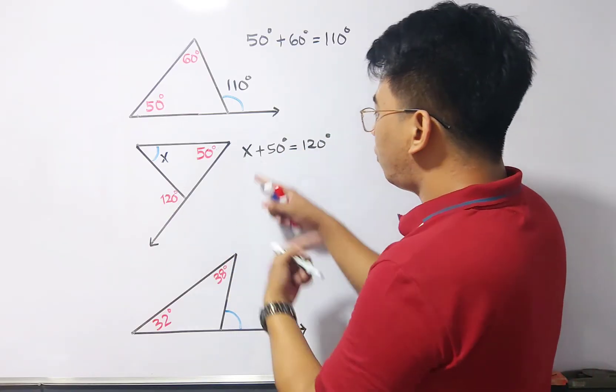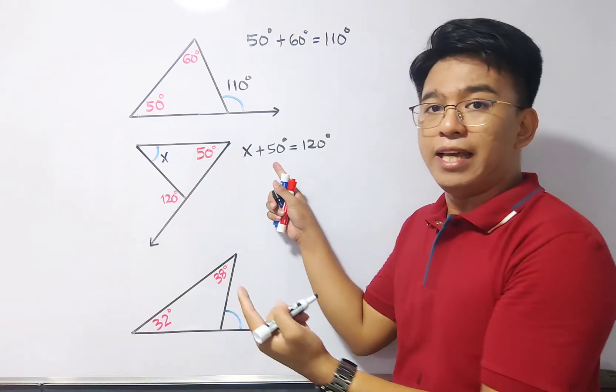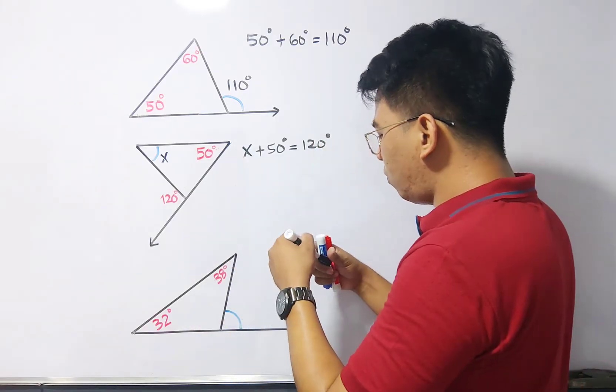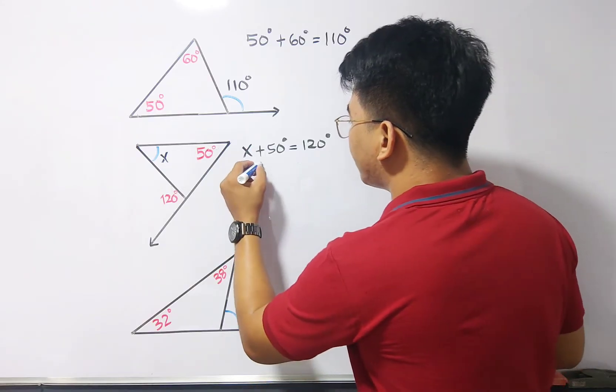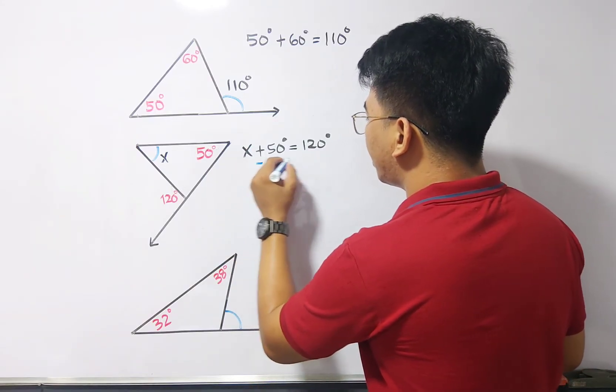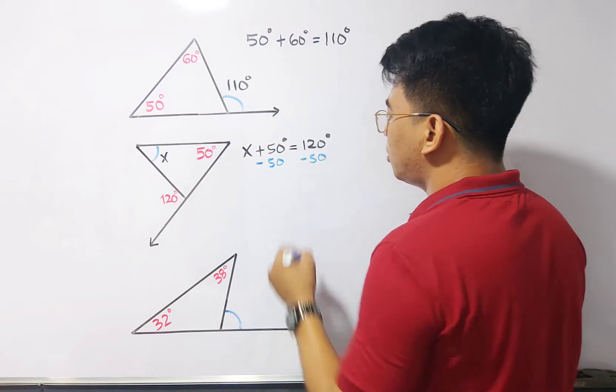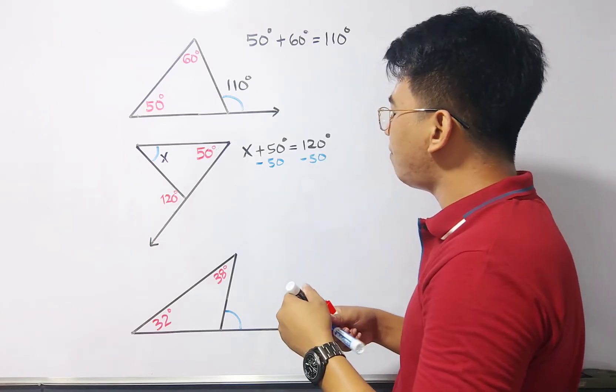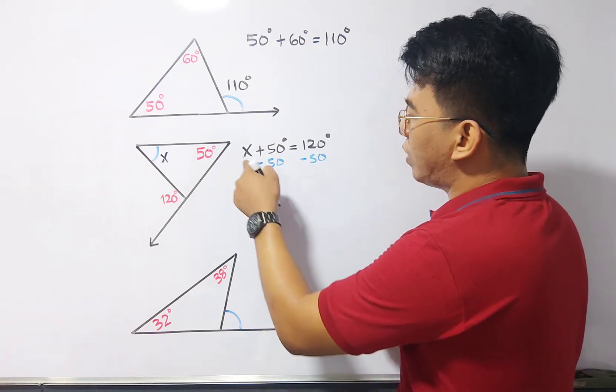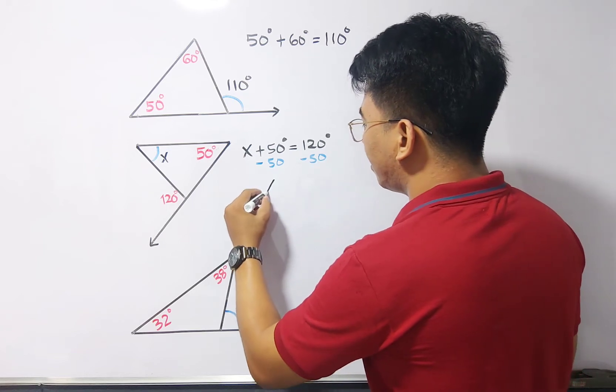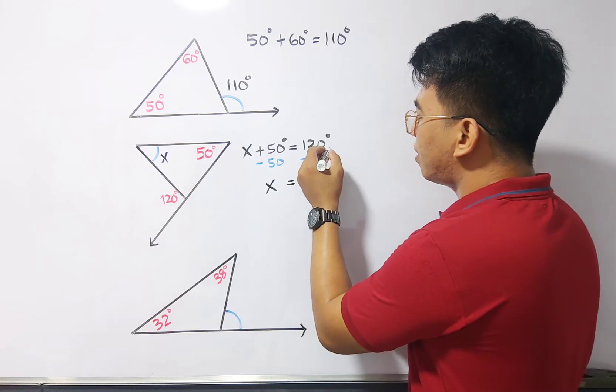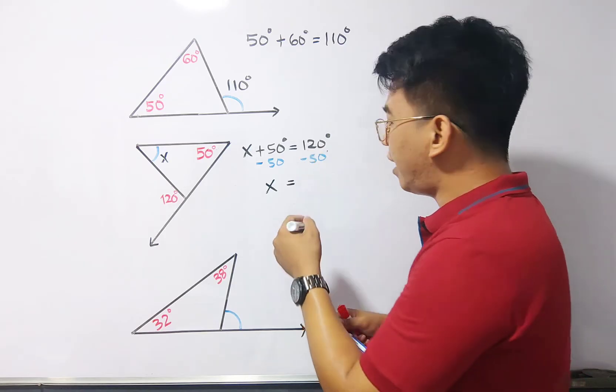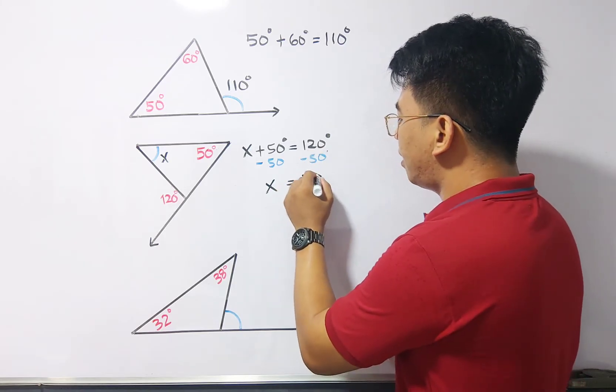Now, to find the value of x, we need to eliminate 50 degrees. So, what you need to do is you need to subtract both sides by 50. So, as you can see, subtracting them, this will become 0. So, what we have here is x, and that is equal to 120 degrees minus 50 degrees, and that is 70 degrees.